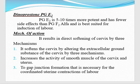First we will discuss the pharmacological method — dinoprostone, prostaglandin E2. It is 5 to 10 times more potent and has fewer side effects than prostaglandin F2 alpha, and it is best suited for induction of labor. The mechanism of prostaglandin E2: it results in direct softening of the cervix by three mechanisms. It softens the cervix by altering the extracellular ground substance of the cervix. It increases the activity of the smooth muscle of the cervix and uterus. It promotes gap junction formation that is necessary for coordinated uterine contractions of labor.